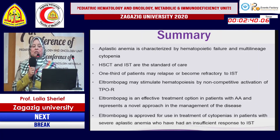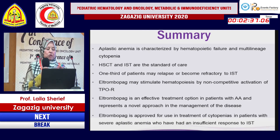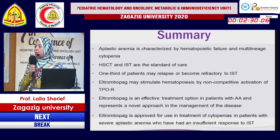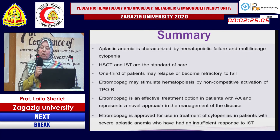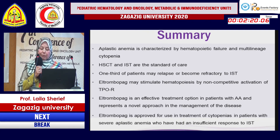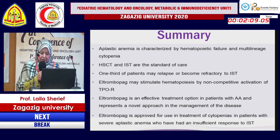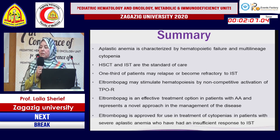In conclusion, aplastic anemia is characterized by hematopoietic failure and pancytopenia. Hematopoietic stem cell transplantation and immunosuppressive therapy are the standard of care. One third of patients may relapse from immunosuppressive therapy, so eltrombopag, which can stimulate hematopoiesis, is an effective and conservative option approved for use in patients with severe aplastic anemia who have an insufficient response to immunosuppressive therapy.